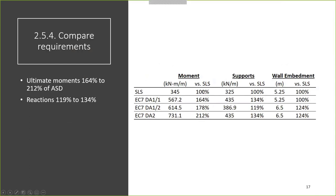Typically in SLS cases we would design for 150%, but the Eurocode 7 combinations result in moments ranging from 64% to 212% of the SLS case. The support reactions are actually much closer and in some cases are even smaller — and it is possible based on how resistances and loads are considered.